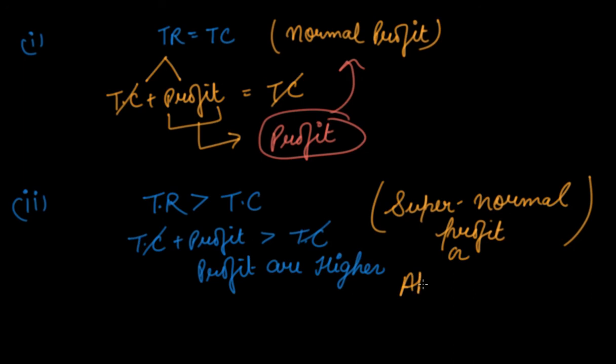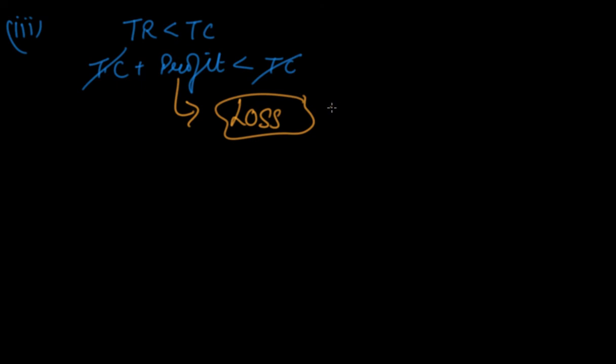And the third and the last situation is when your TR is less than your TC, which means your total cost plus your profit is less than your total cost. So will you be able to earn profit in this case? No. This profit will be a loss, so you will be earning some normal loss or abnormal loss in this case.